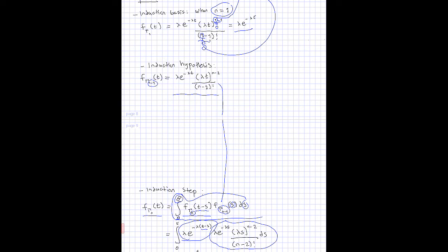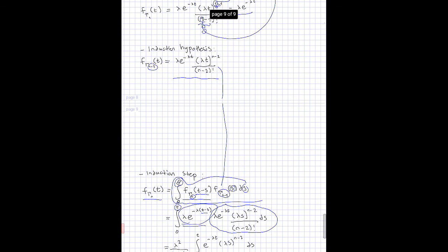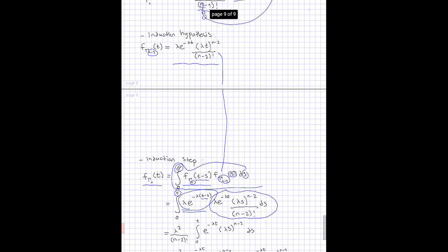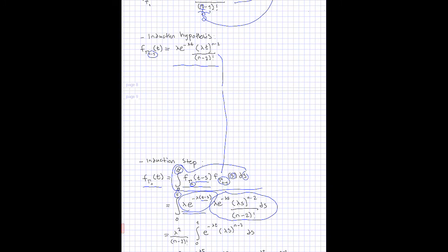We also know that since s cannot exceed t, the upper limit is actually not infinity but t. This is because if s is greater than t, the probability becomes zero, so that is why we change the integration limits.